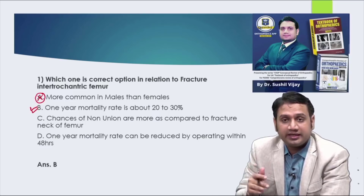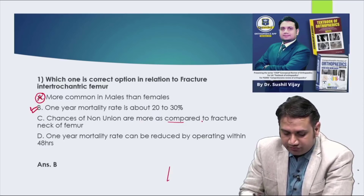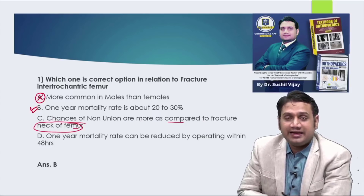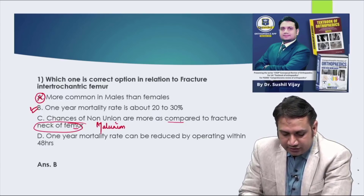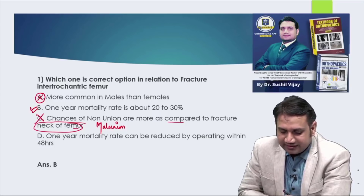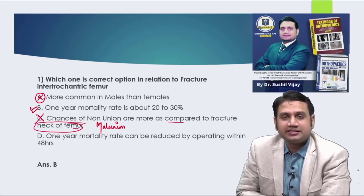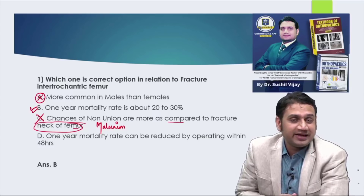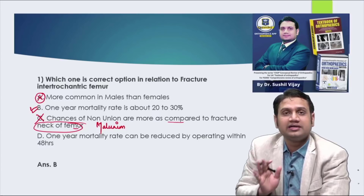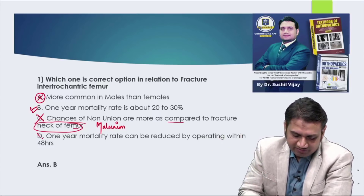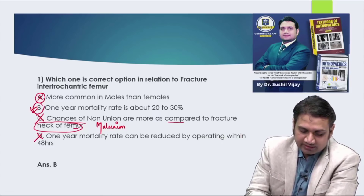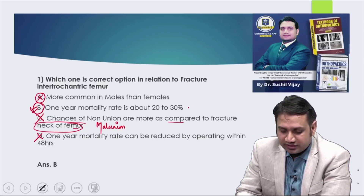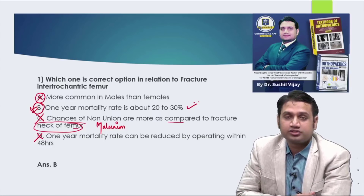Option C says chances of non-union are more compared to fracture neck of femur — incorrect, because non-union and avascular necrosis are more commonly related to neck of femur, while IT fracture more commonly causes malunion. Option D says one-year mortality can be reduced by operating within 48 hours — no standard textbook literature supports this. So the correct answer is option B: IT fracture presents with malunion, treated by proximal femoral nail or dynamic hip screw, with mortality rate around 20 to 30 percent.